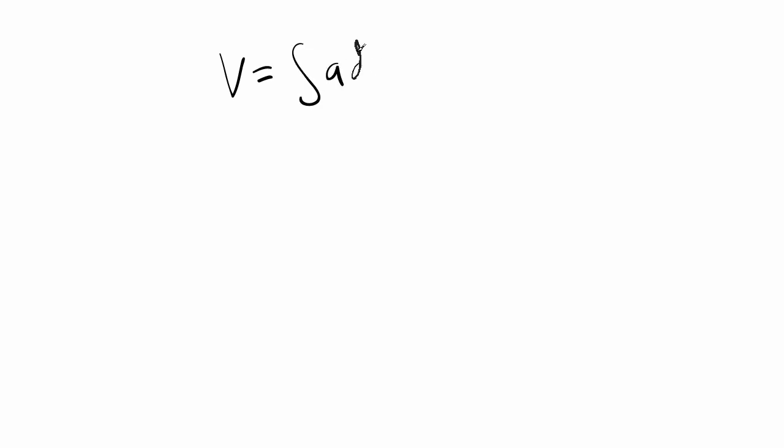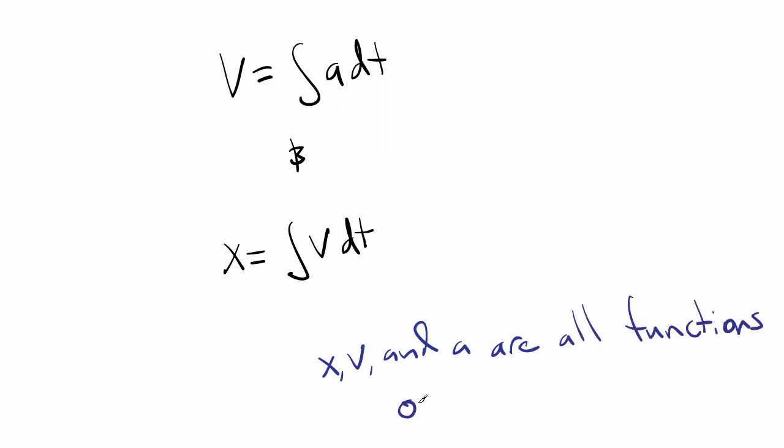To figure out the velocity, we simply need to take the antiderivative, or integral, of the acceleration. And once we know the velocity function, we take the integral to get the position. So let's do it.